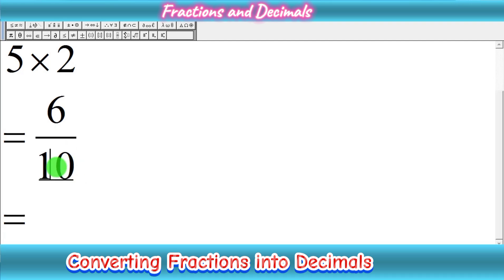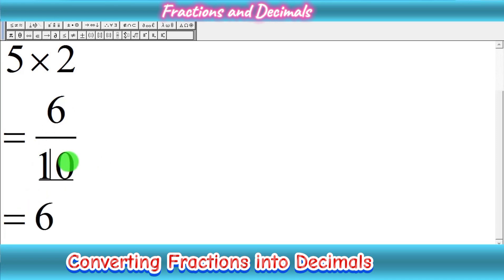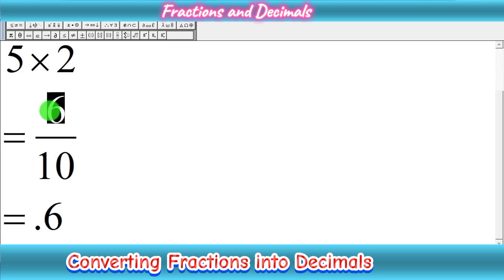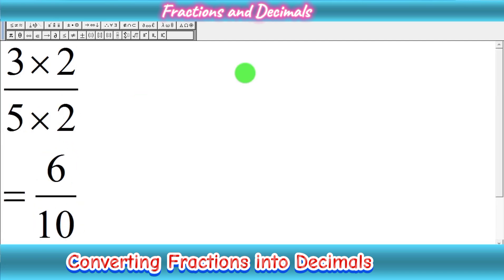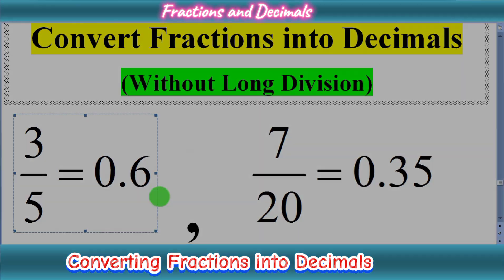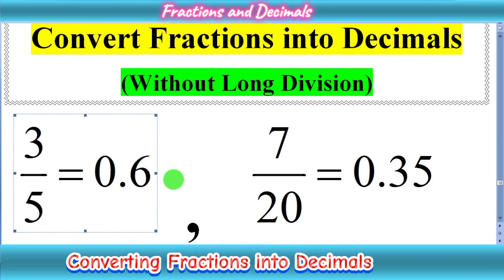Now we can convert it into a decimal directly. Starting from the right side, the first 0 gives us the first digit, which is 6. We have no more zeros, so we write a decimal point, and since the numerator has only one digit, we write 0 in front. So 0.6 is our final answer for the fraction 3 upon 5.